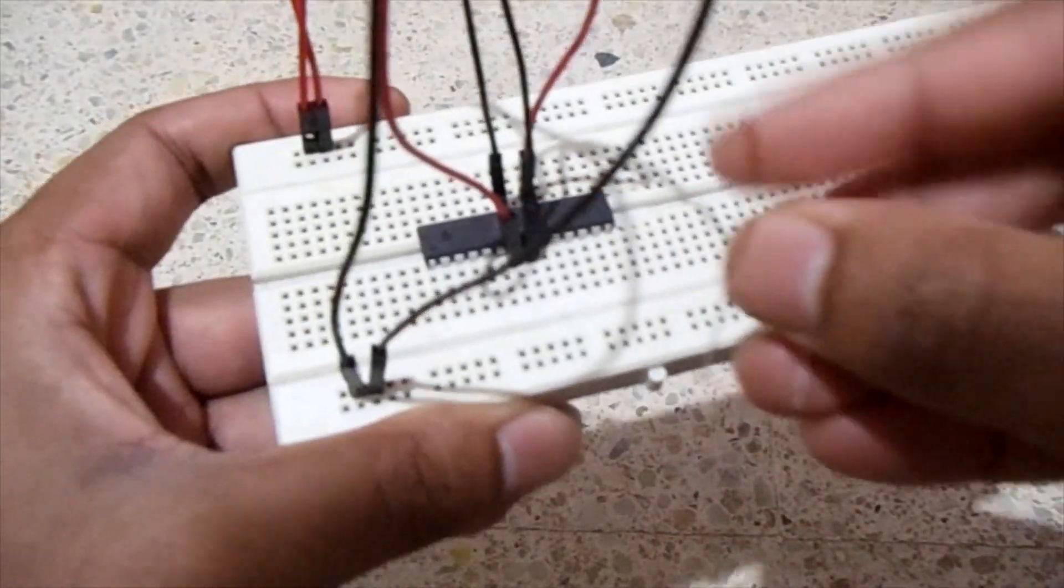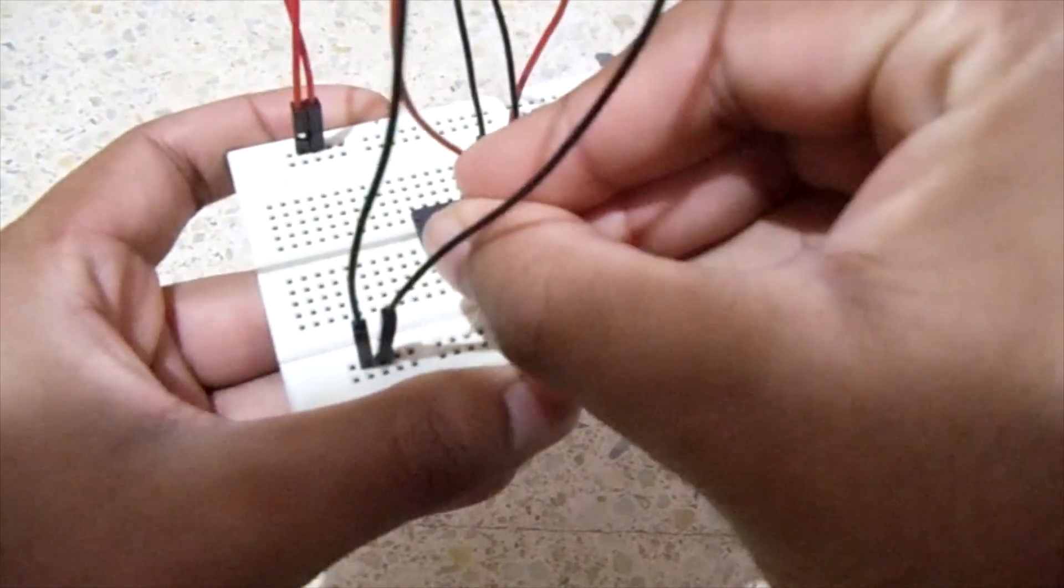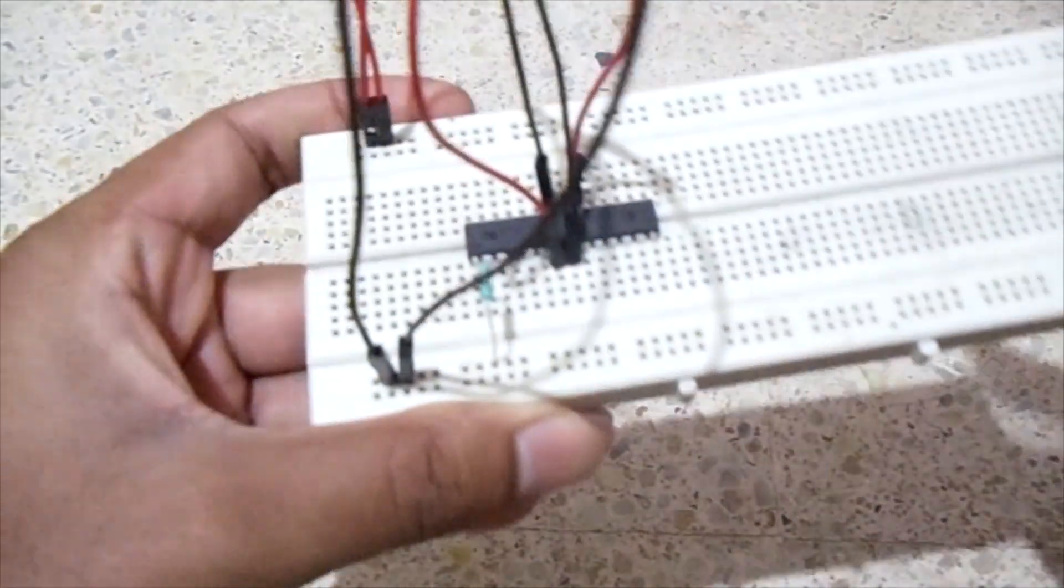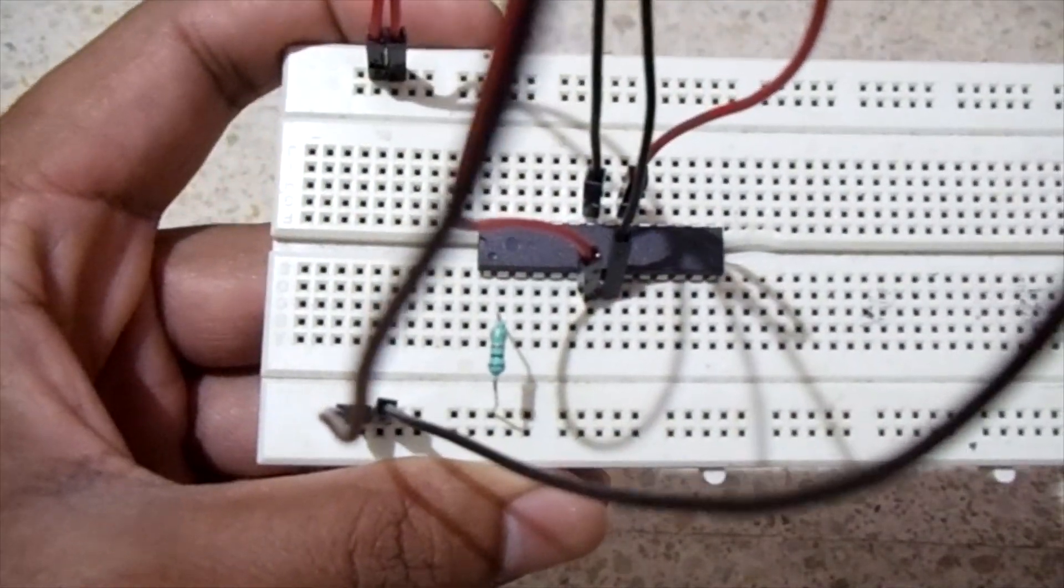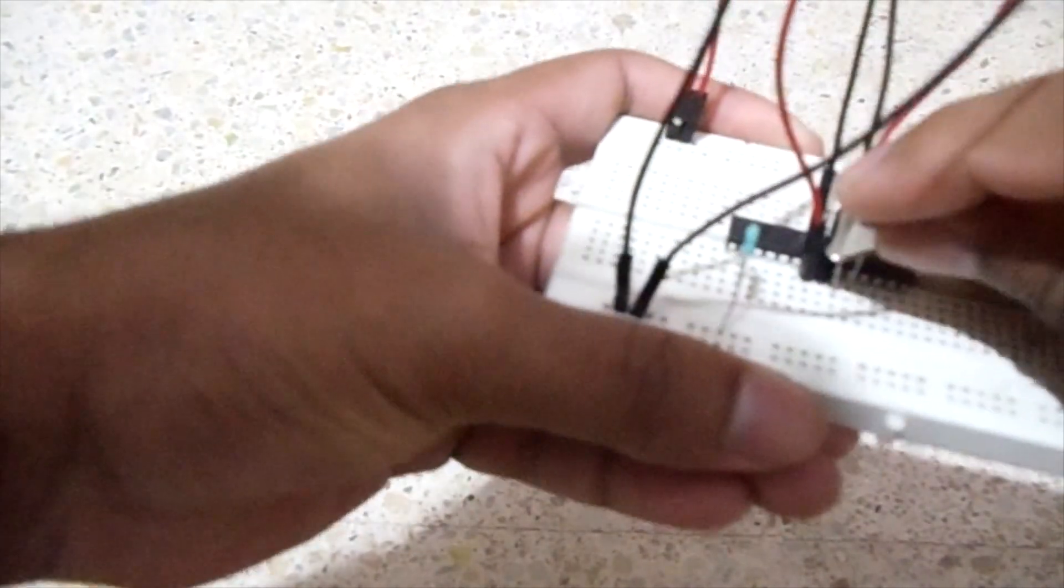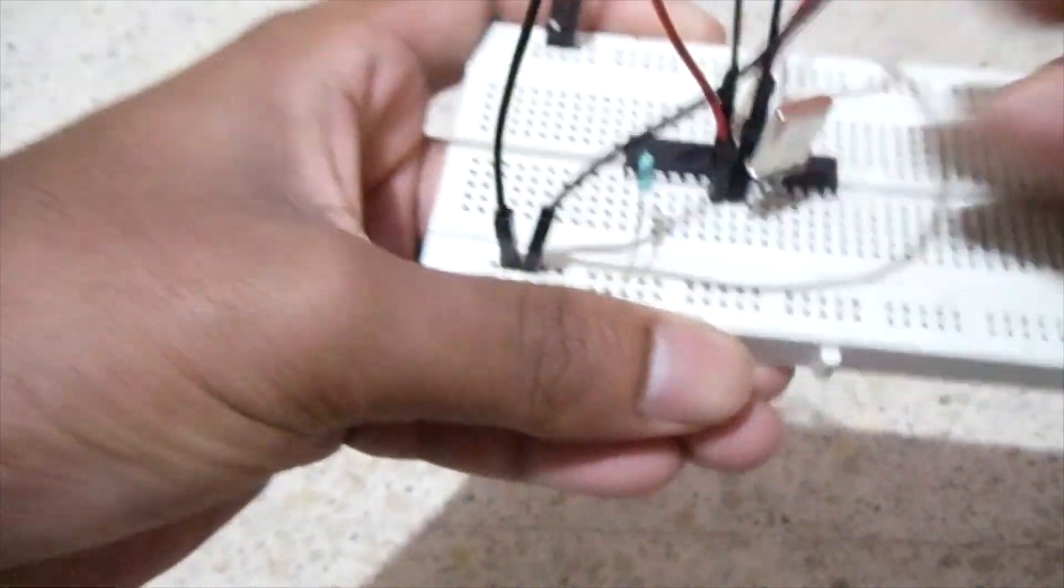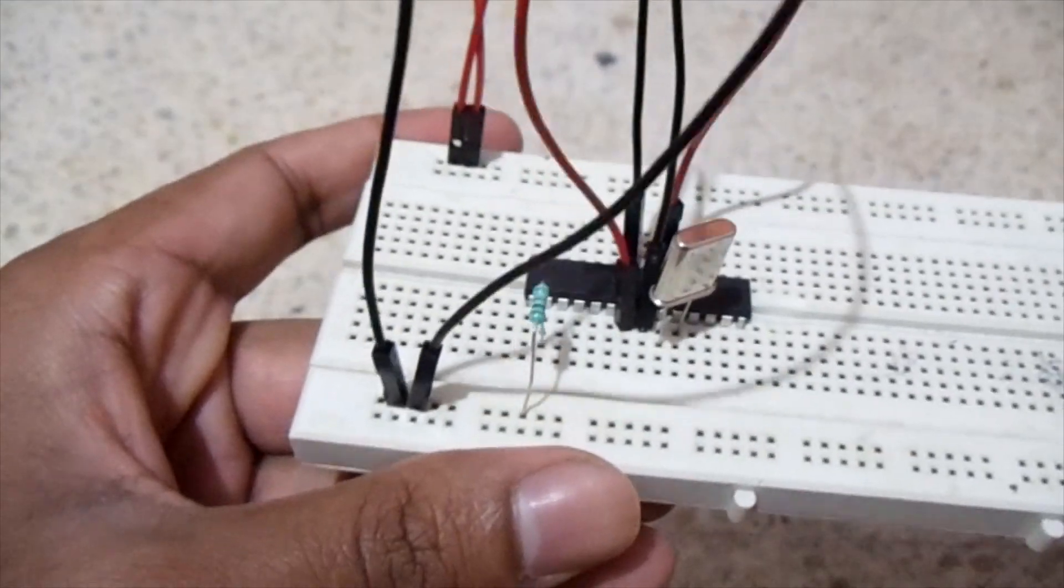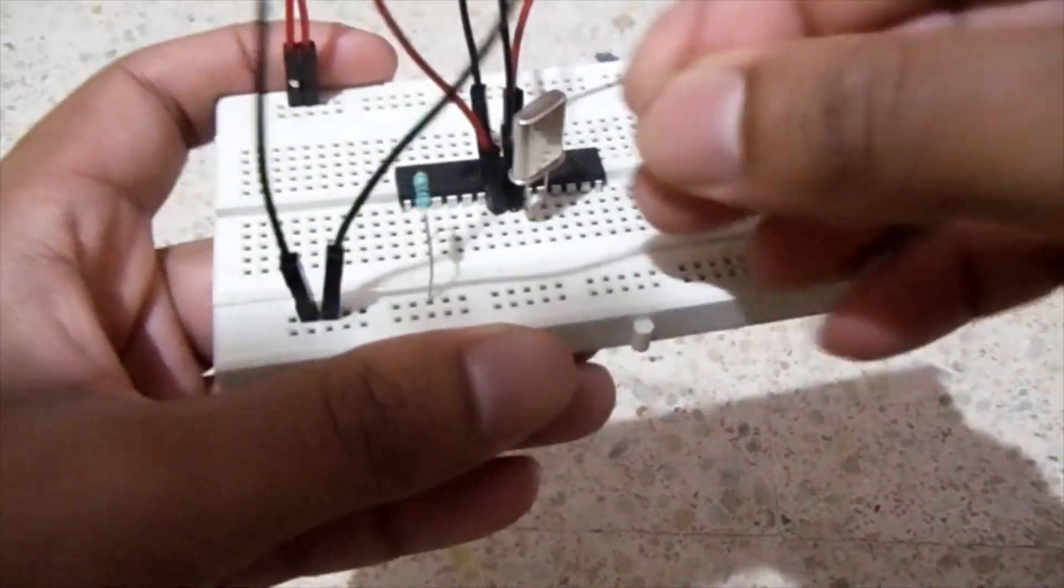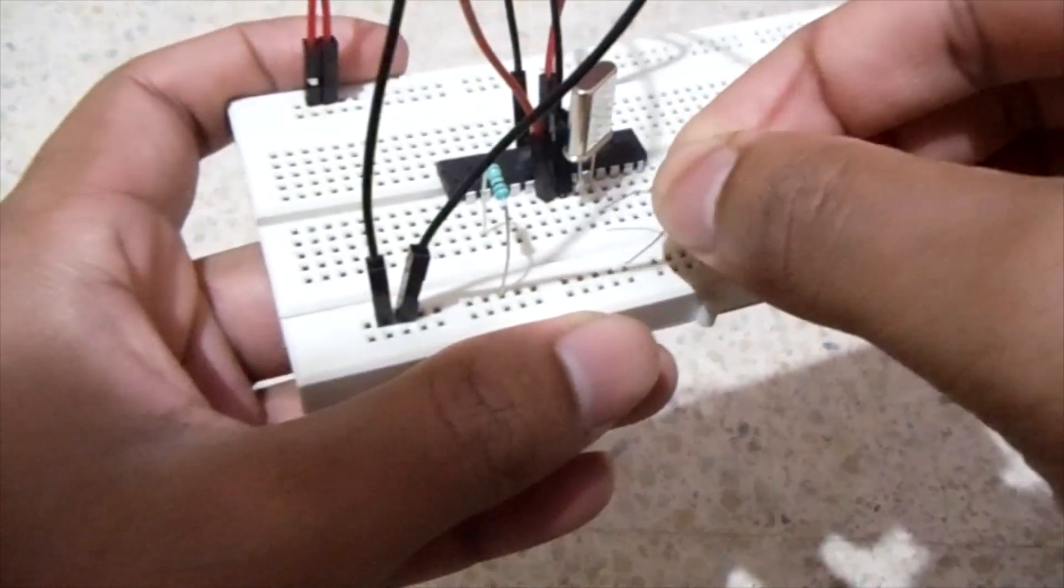Next connect 10K resistor to pin number 1 and then the other lead to ground. I had accidentally connected the resistor to pin 2 which I changed later in the video. Then connect crystal to pin number 9 and 10. From pin number 9, connect the 22 picofarad capacitor to ground.